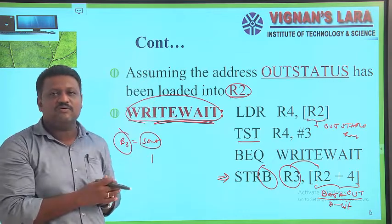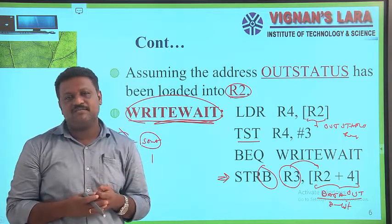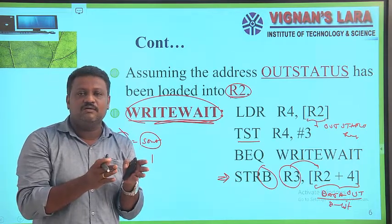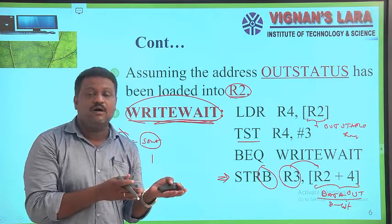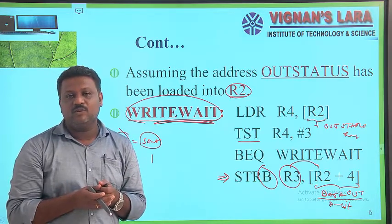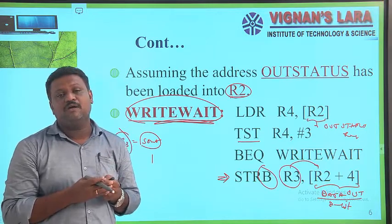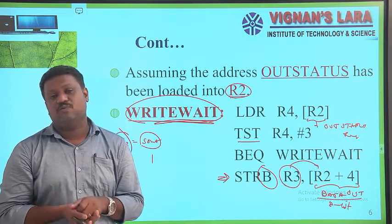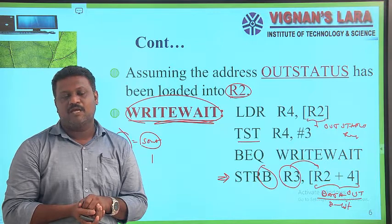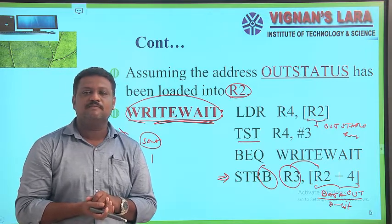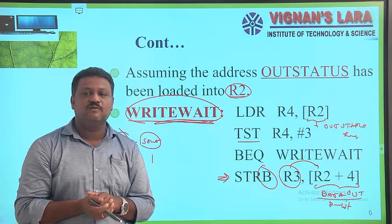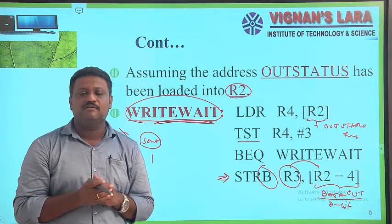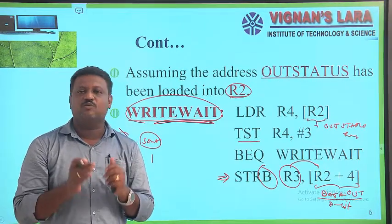If the processor receives data from an input device and wants to transfer data to an output device, it executes the respective routine — read-wait or write-wait. That is why in ARM processors, reading a character from an input device or transferring a character to an output device is done with programmed-controlled I/O. I hope you understood the concept of I/O operations in ARM processors. Thank you for patient listening. In the next class, we will discuss some other new topic.